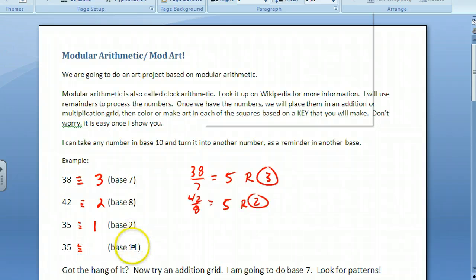35 in base 11, I'm going to end up with 11 goes into 33, and then I'm going to have a remainder of 2. So that's how you do the modules.